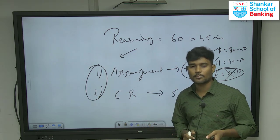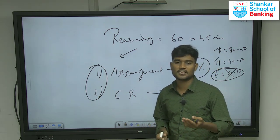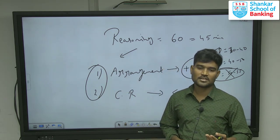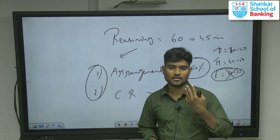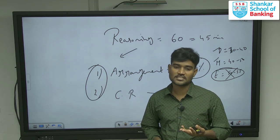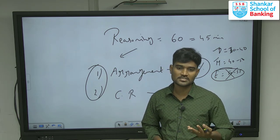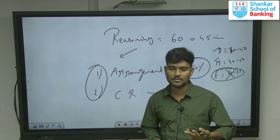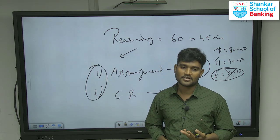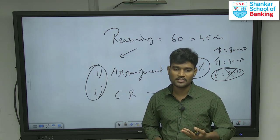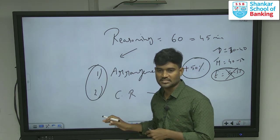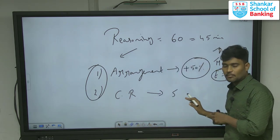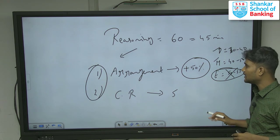Apart from arrangement and critical reasoning, they also ask syllogism, inequality at a difficult level, and coding-decoding. These are the other question types asked in reasoning. So arrangement and critical reasoning are the two most important topics.